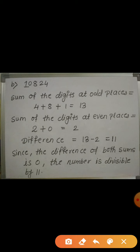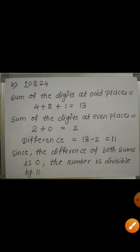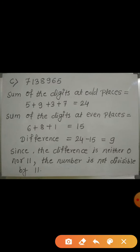The digits at even places are 2 and 0, and their sum is 2. Taking the difference: 13 minus 2 equals 11. Since the difference is 11, we can say that 10824 is also divisible by 11.